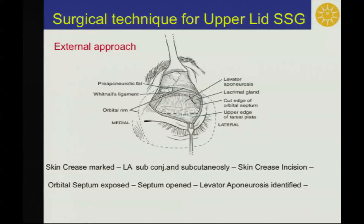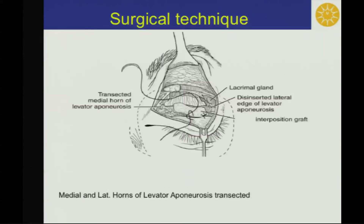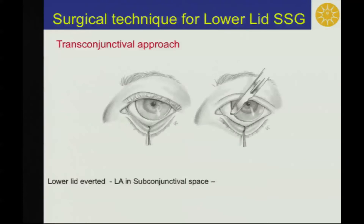For the upper lid surgical technique, an external approach is used in which, after anesthetizing the lid, the skin crease is marked and incised, orbital septum exposed, septum opened, and levator aponeurosis is identified and dissected off from the tarsus. Medial and lateral horns are transected, and the graft is sutured to tarsus and levator with 5-0 vicryl.